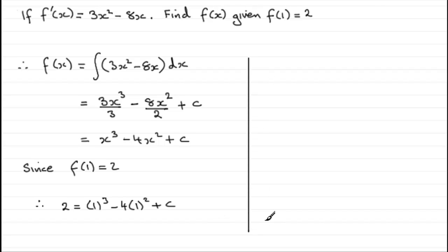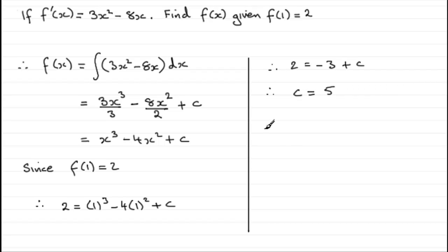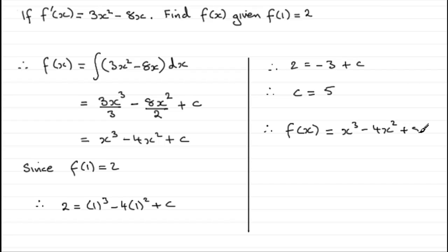So we've got that therefore 2 equals 1 minus 4, which is minus 3, plus c. And if we add 3 to both sides, we end up with c equaling 2 add 3, which is 5. So therefore f(x) equals x cubed minus 4x squared plus 5. And there's our answer.